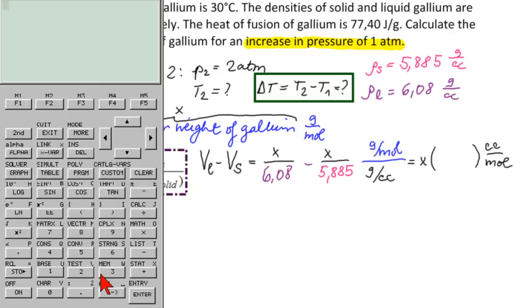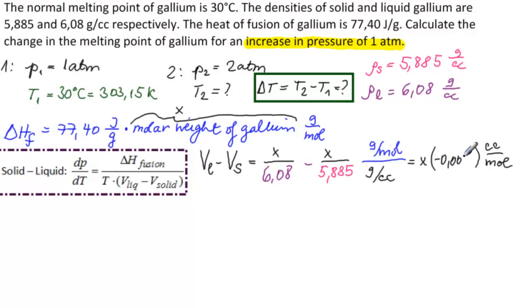Here's our calculator. We have 1 divided by 6.08 minus 1 divided by 5.885. And that equals minus 0.00545. Let's store that somewhere. Store it in A. So minus 0.00545.